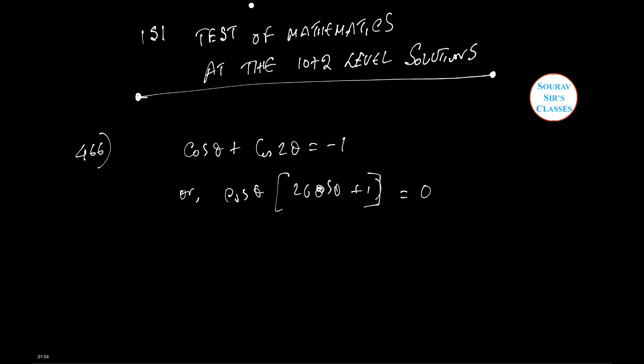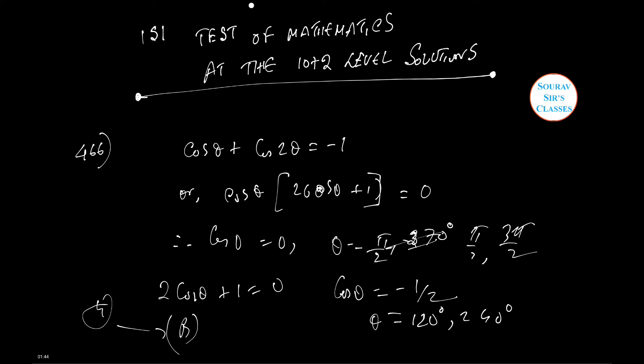Actually, 2 cos²θ, so this gives cos θ = 0, which means θ = π/2 (90 degrees) and 3π/2 (270 degrees). Another part gives 2 cos θ + 1 = 0, so cos θ = -1/2, which makes θ = 120 and 240 degrees. So there are four possible solutions, and option B is correct. Now we're proceeding to the next question.